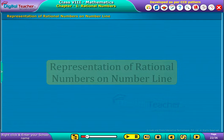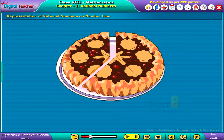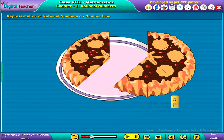Here, you can see a delicious pizza. Let us divide it into 8 equal parts and represent 5 eighths of pizza on a number line.